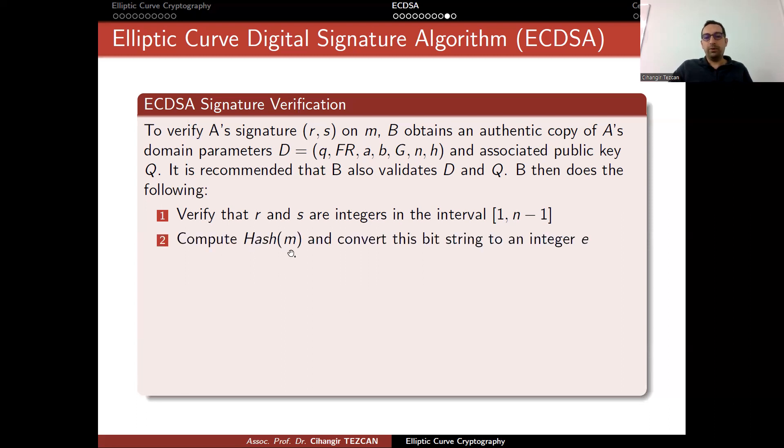b now computes the hash of m and converts this into a bit string e. b then computes s inverse modulo n, s is coming from the signature. Then computes e times w and r times w. Again, r is from signature. So obtain two different values, u1 and u2.